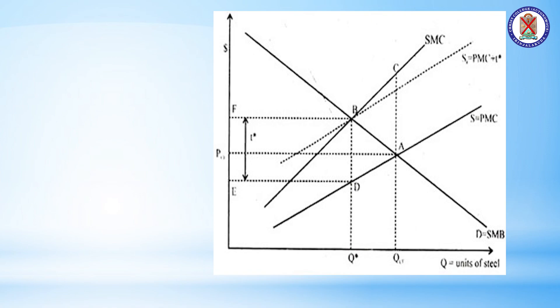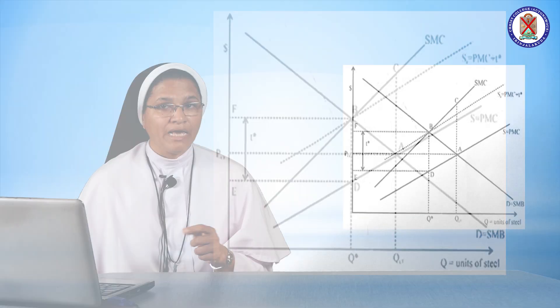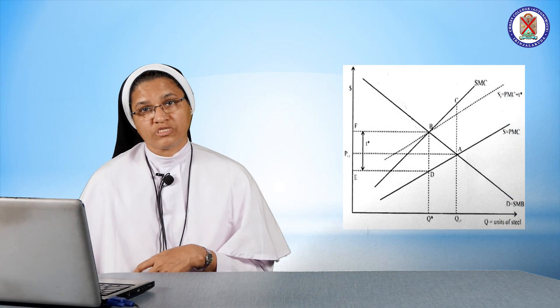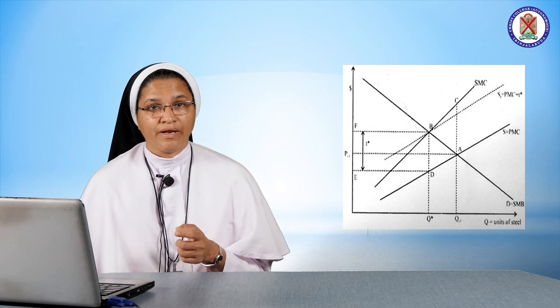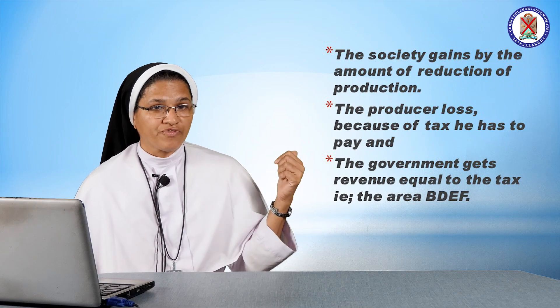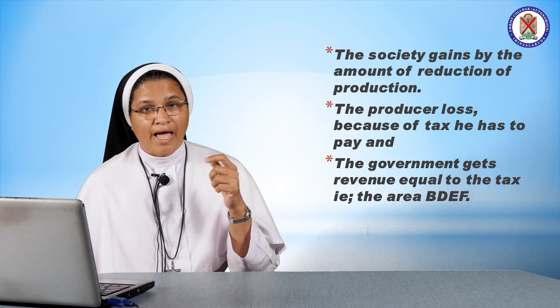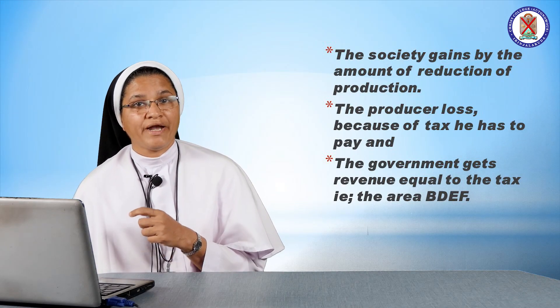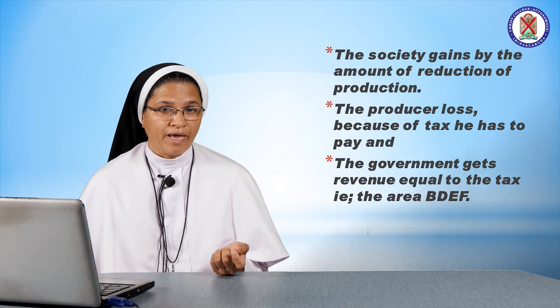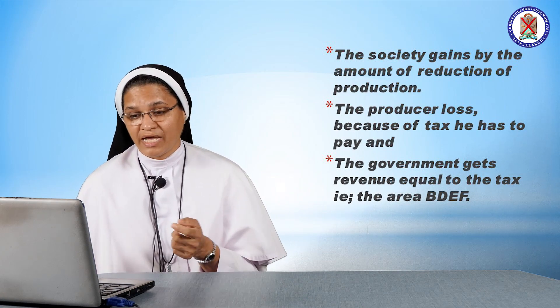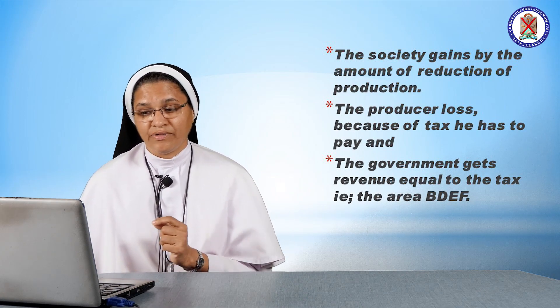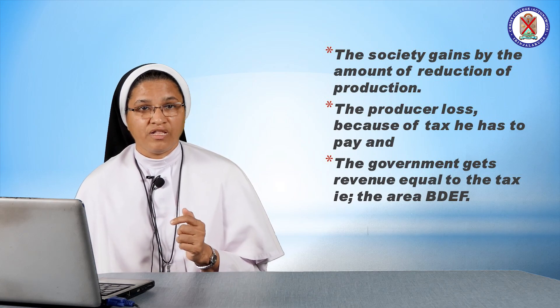Here ST equals private marginal cost plus the tax. Ideally, the tax would be equivalent to the external damage caused by the producer, thereby reducing the external cost going forward. The society gains from the reduction in production, while producers bear a loss because of the tax they have to pay. The government gains revenue equal to the area B-D-E-F in the figure.